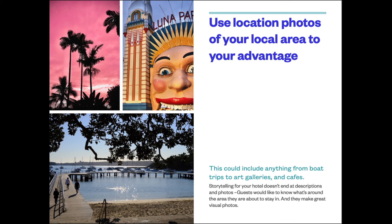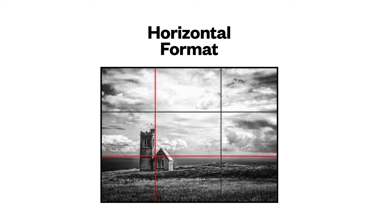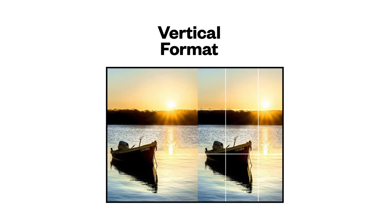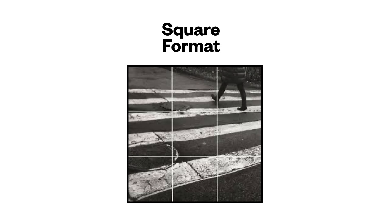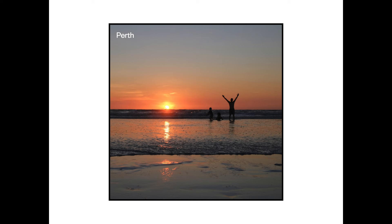In my experience, 80% of people with a phone — if you get the rule of thirds down pat — can take good location shots for your hotel Instagram. In a horizontal format for Facebook, that's how it looks. Vertical, you've got the composition with the rule of thirds there. And on Instagram it becomes quite arty. Here's an example from Fitzroy Island, and that's my family in Perth modelling for me again.